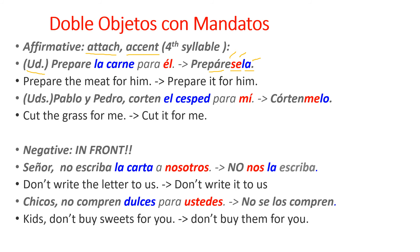Pablo y Pedro — here I'm talking to two people, so I need to use the ustedes command. Corten el césped para mí — cut the grass for me. Cut it for me. So corten is my command, then the indirect object me, then lo because you're talking about el césped. Then I count my vowels: one, two, three, four — and put the accent mark.